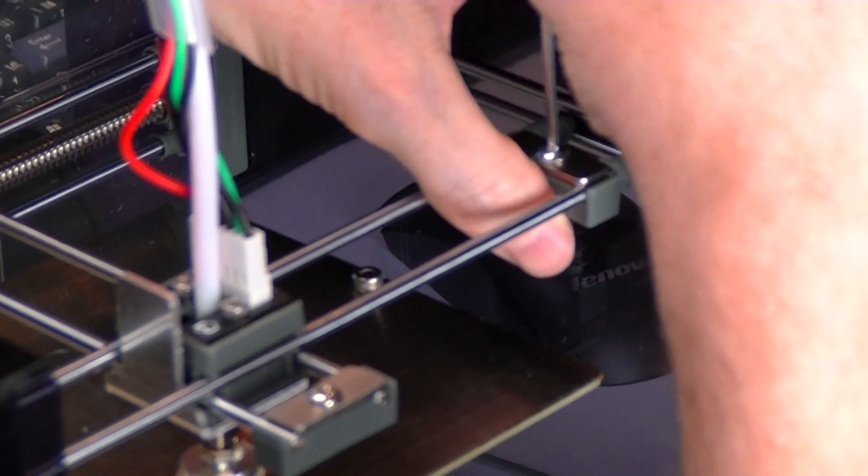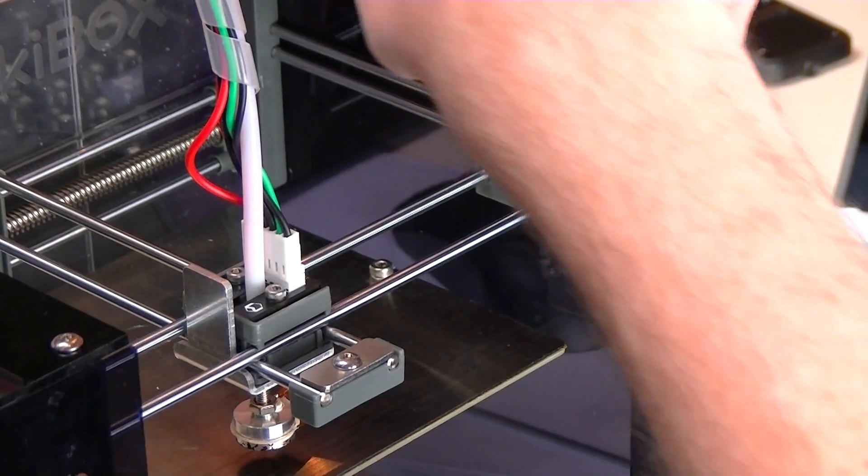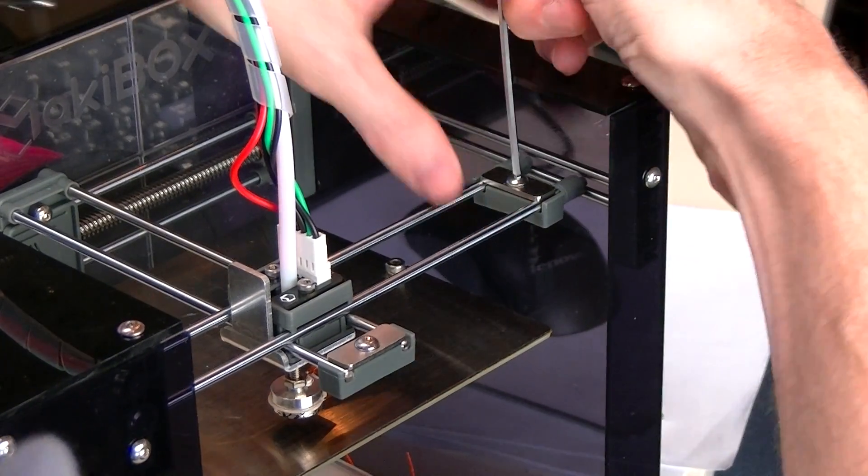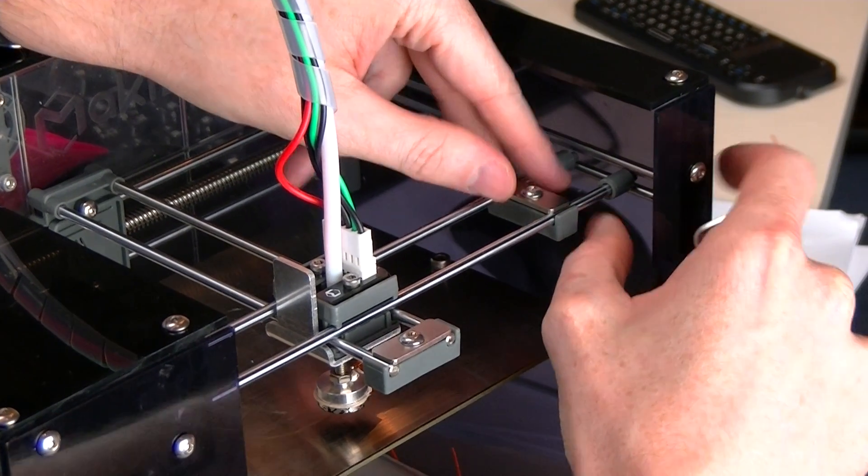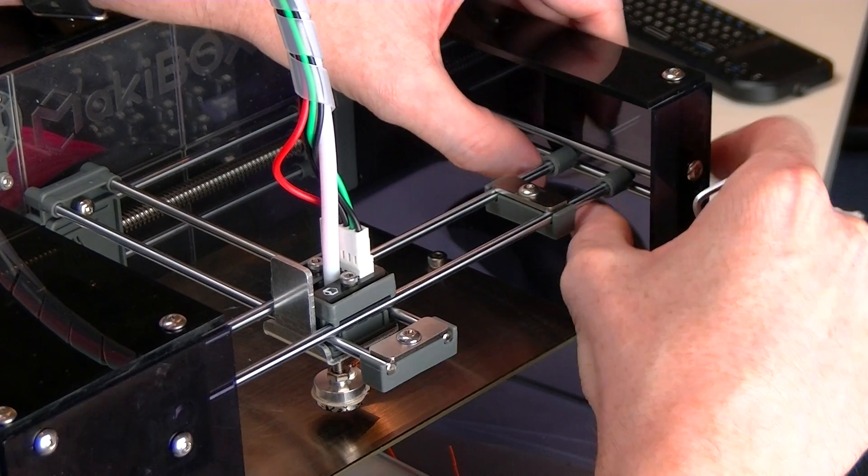So what we're going to do is loosen it up enough to where that clip is able to move back and forth. Then we're going to push these end tips in until they're up against the rods.